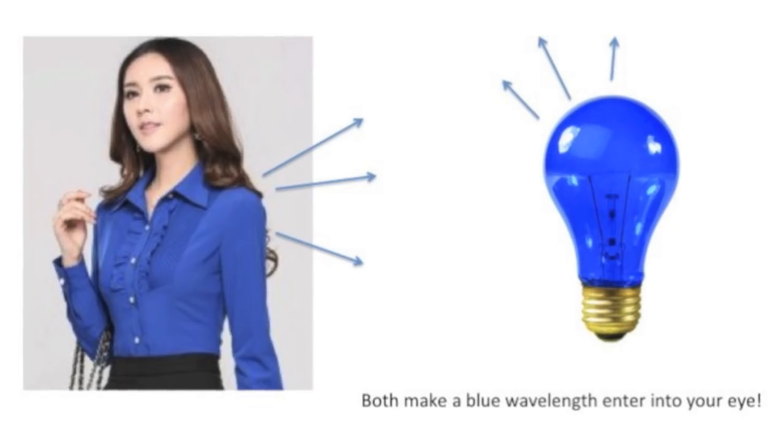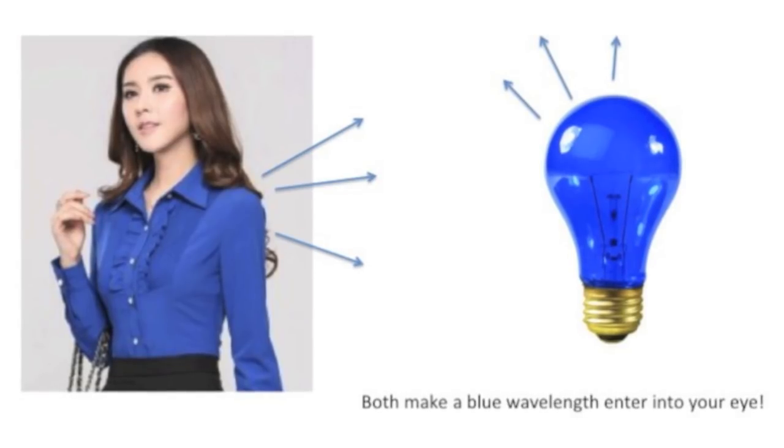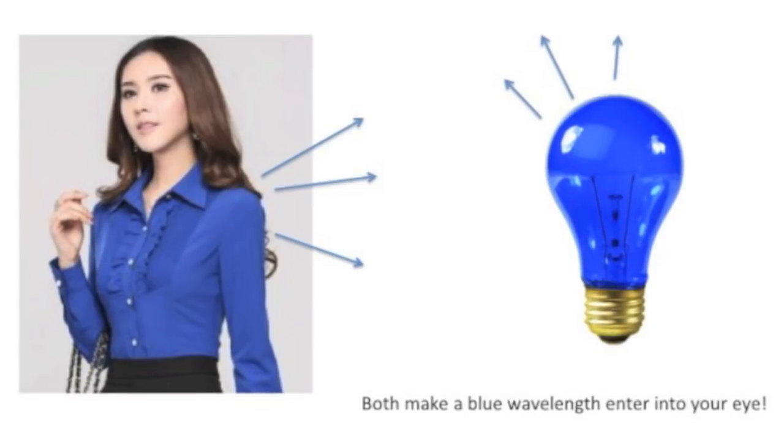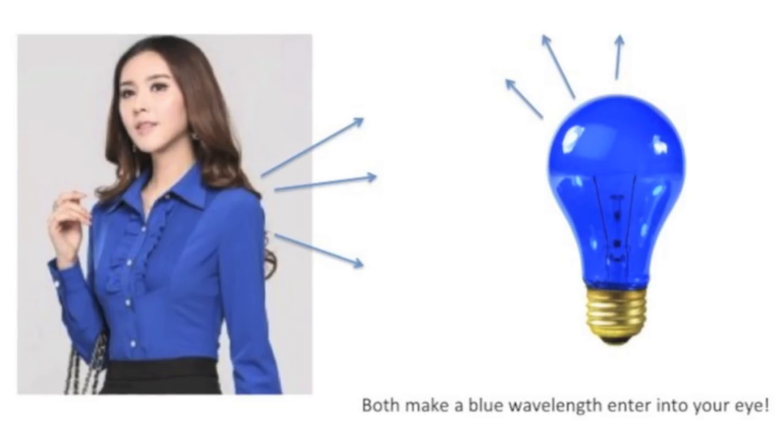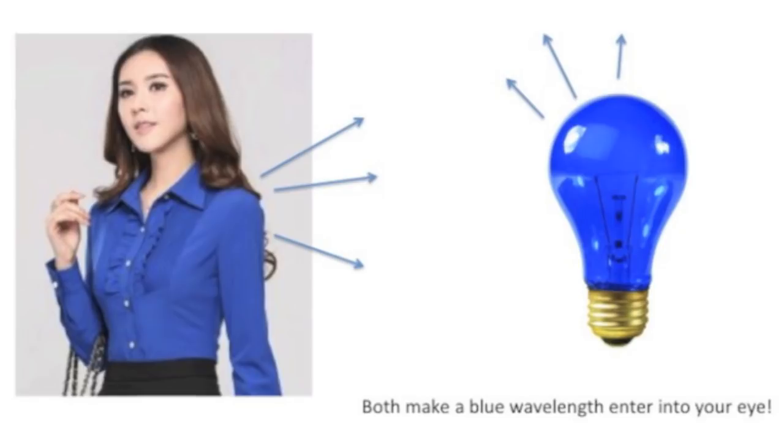When you look at this blue shirt, all of the colors that are not blue get absorbed by the shirt, and all of the colors that are blue - so basically only blue - get reflected. When the shirt absorbs all of the wavelengths except for blue, the blue wavelength gets reflected, travels toward your eye, and you see the blue.